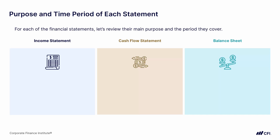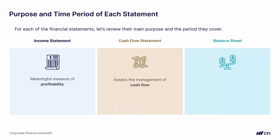What can the income statement tell us about the company's health? It can give us a meaningful measure of profitability. Next, we can look to the cash flow statement, where we can get a sense of how well or how efficiently the company is managing its cash flow. And finally, we can look to the company's balance sheet, where we'll see a list of all the assets, understand their value and how they're financed, which gives us insight into the company's capital structure.